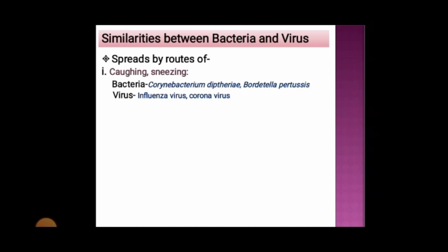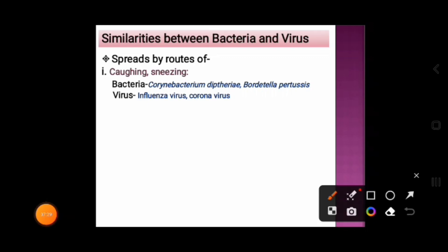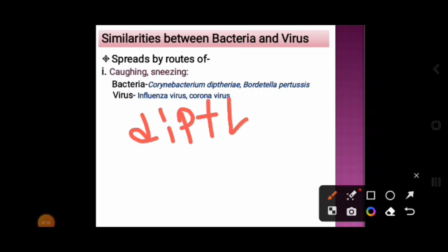Both bacteria and viruses spread by the route of coughing and sneezing. Examples of bacteria that spread through coughing and sneezing include Corynebacterium diphtheriae, which causes diphtheria — d-i-p-h-t-h-e-r-i-a. If you omit the 'e' from the species name diphtheriae, you get the disease name diphtheria.